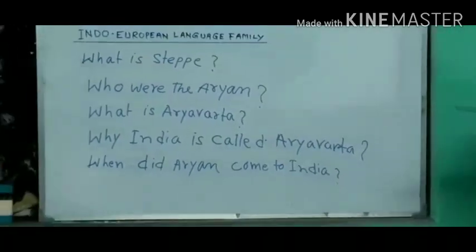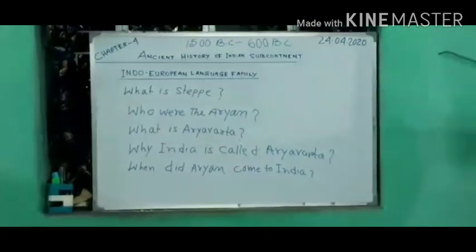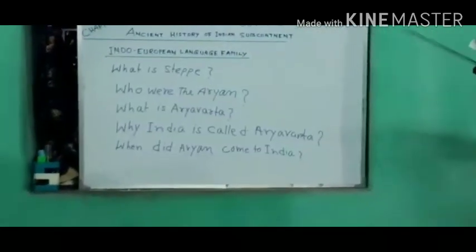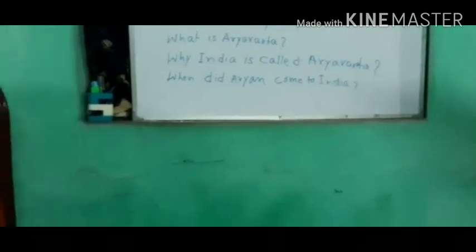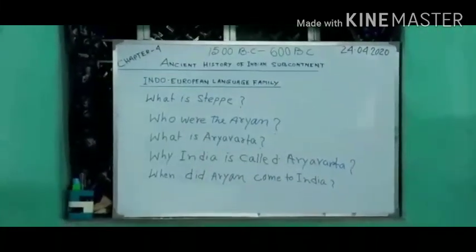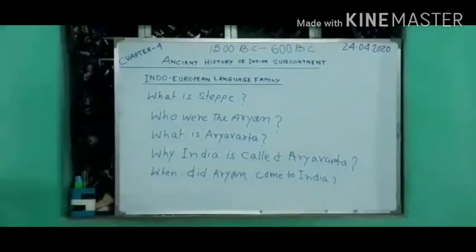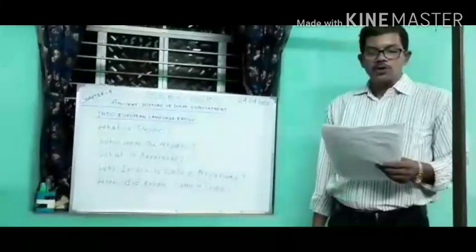My next question is: when did the Aryans come to India? By 1500 BC, the Aryans migrated into the Indian subcontinent, coming from Central Asia. This large group of nomadic cattle herders crossed the Hindu Kush mountain and came into contact with the Indus Valley Civilization.